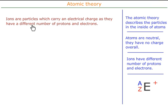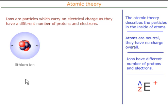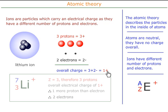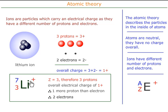If we have an ion — an ion carries an electrical charge — so this means that there must be a different number of protons and electrons. A lithium ion, for example, has got three protons — that's three positives — and two negatives. There must be one more positive than negatives, so the overall charge is 1+. So a lithium ion could be represented by 7 over 3 Li+. Three protons, overall charge of 1+, therefore one more proton than electrons, therefore there are two electrons.